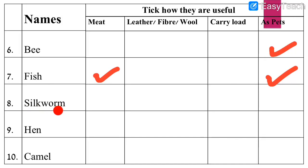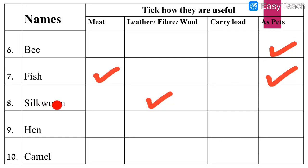Number 8: Silkworm. Silkworm is a very tiny insect and comes in the category of animals. Can we get meat from silkworm? No. Can we get leather, fiber, or wool? Yes, we get silk from silkworm — tick mark. Can silkworm carry load? No. Can we keep silkworm as our pet in the house? No, it is not possible to keep silkworm as pets.